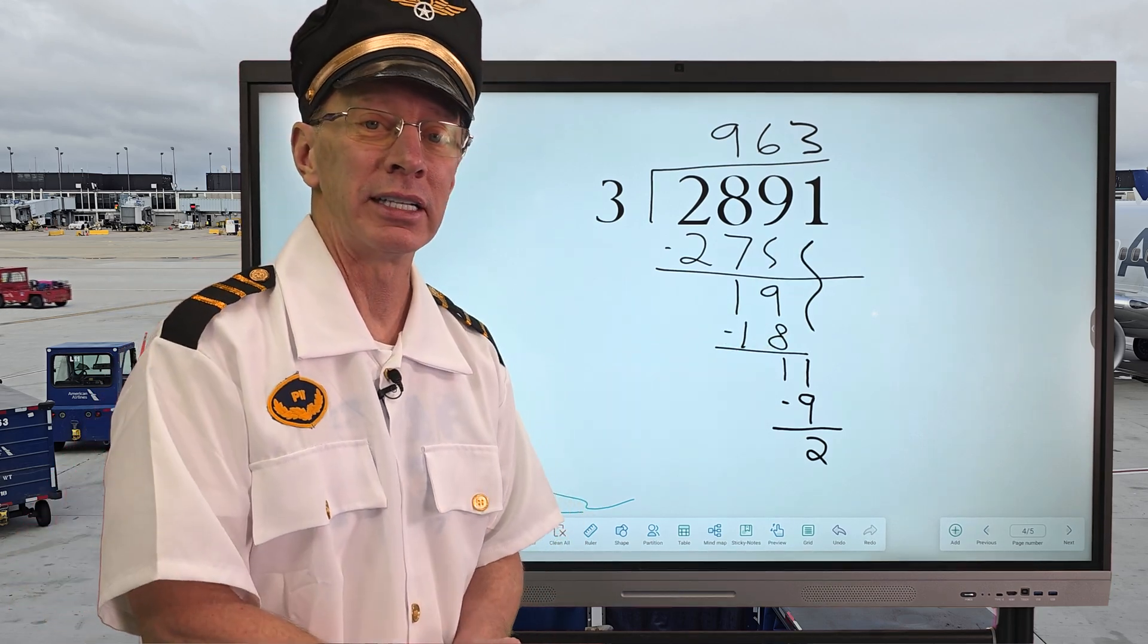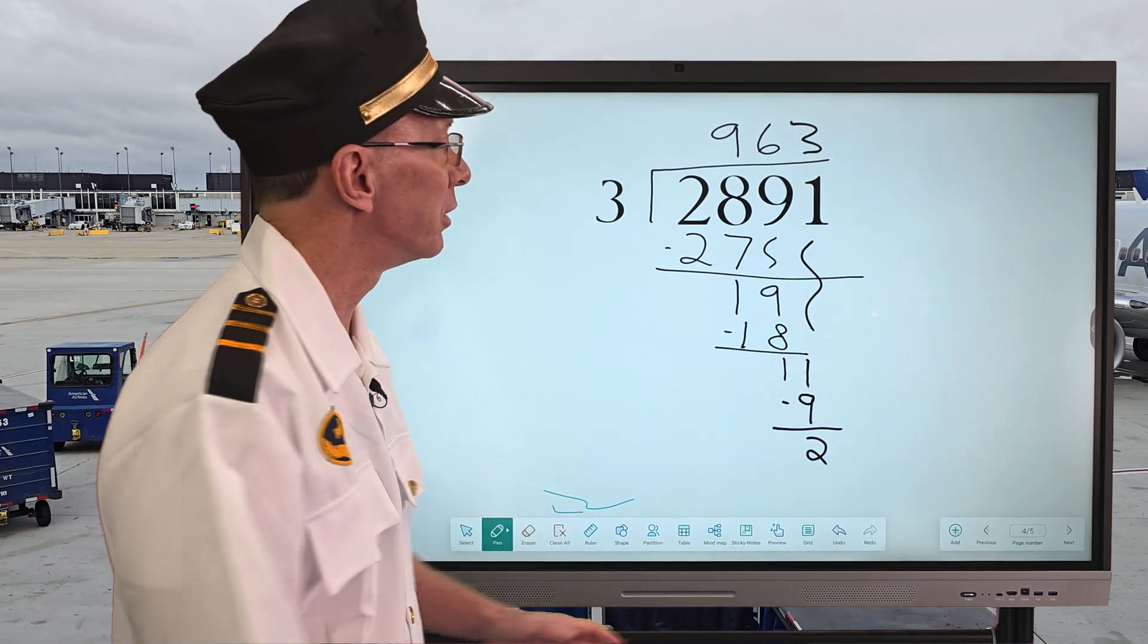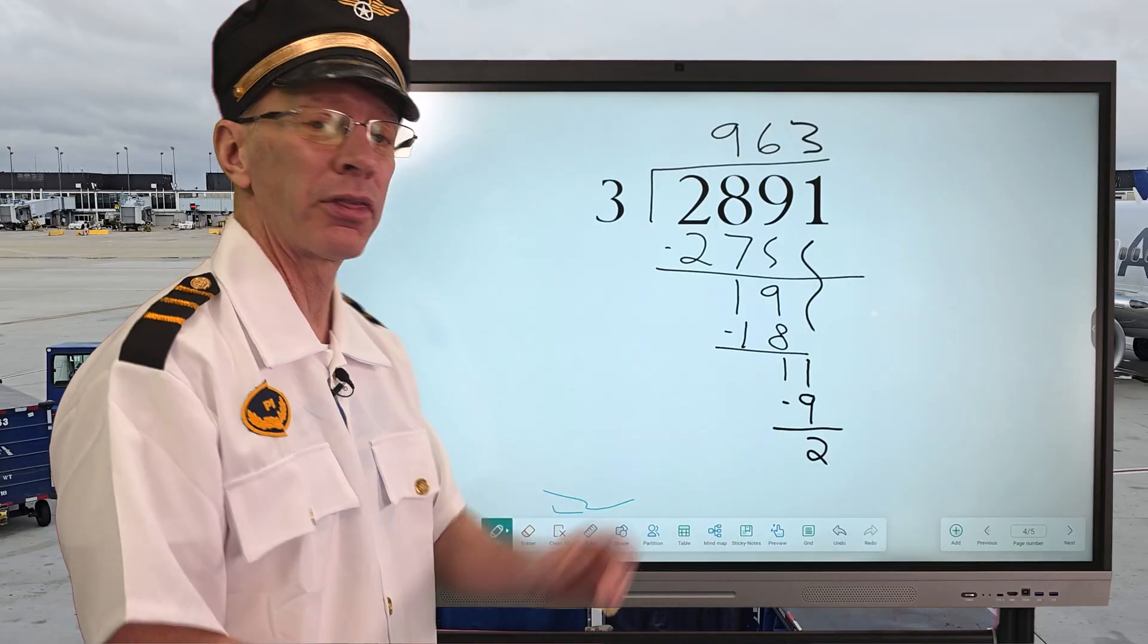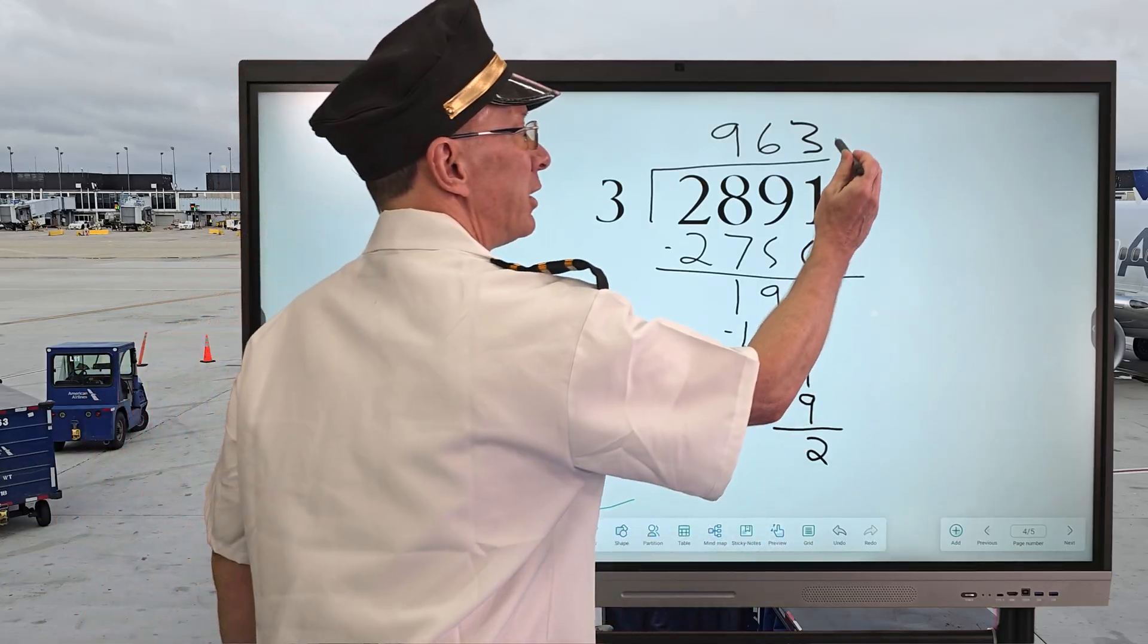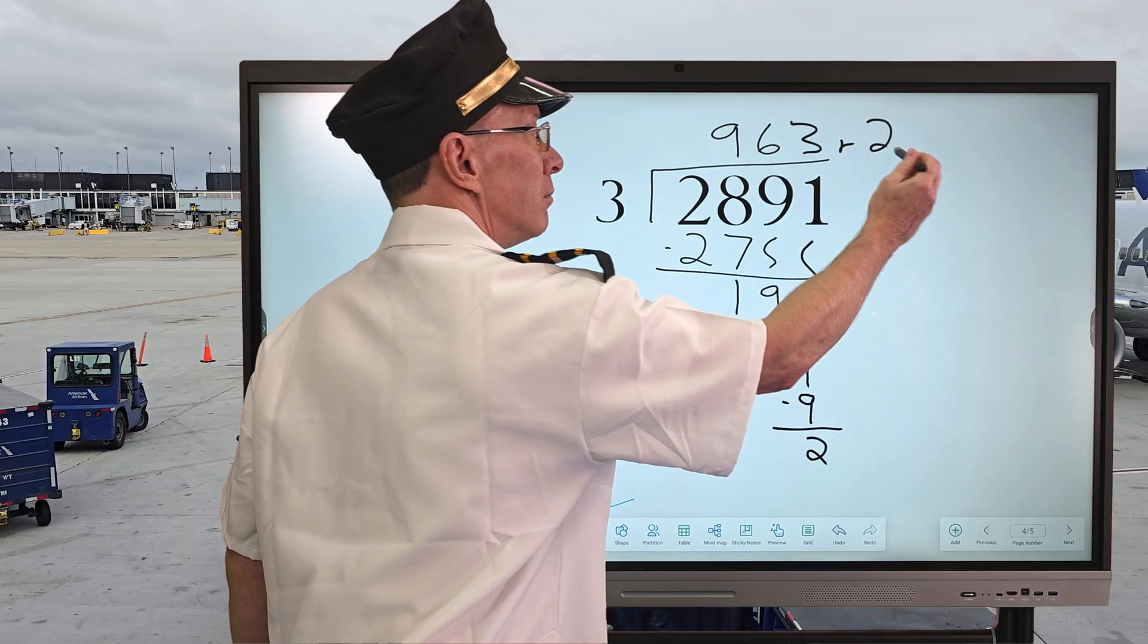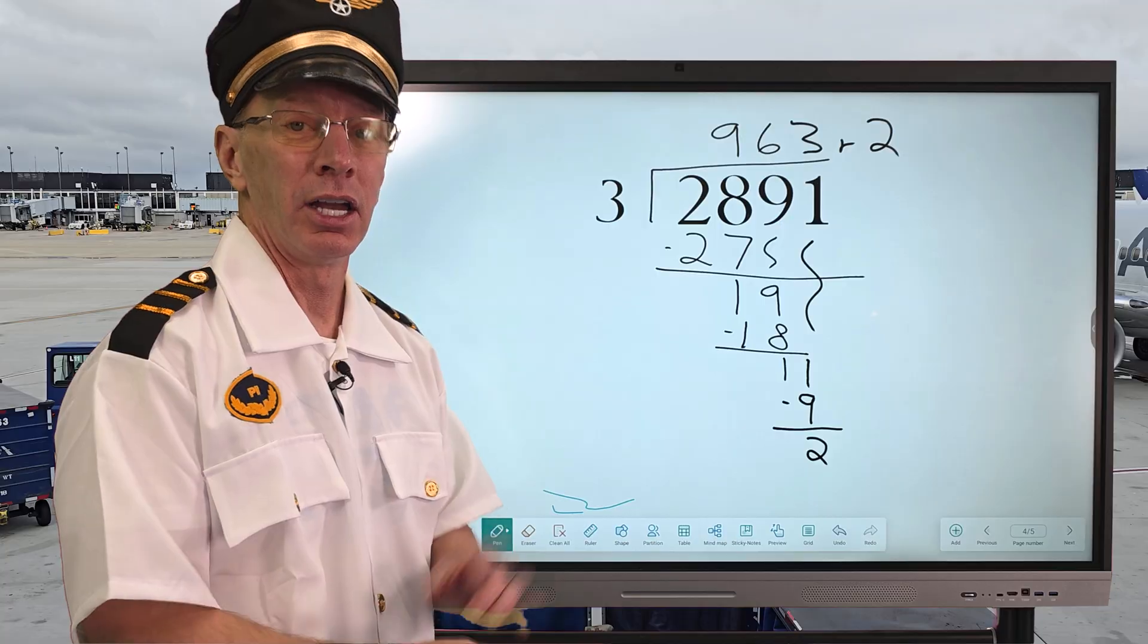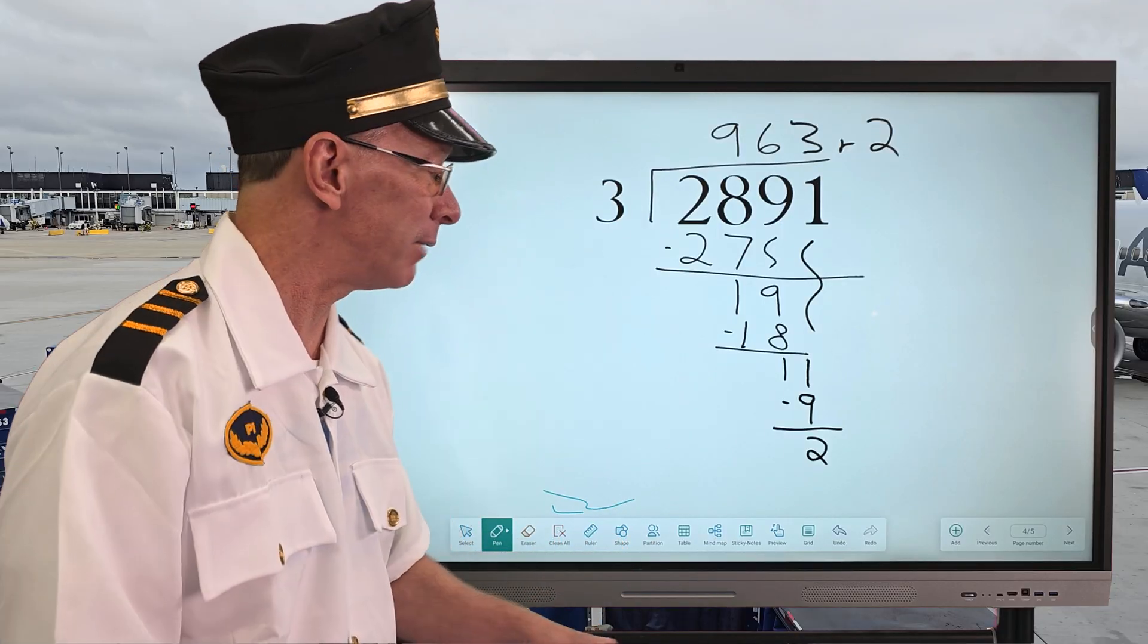Is there any other number to bring down? No, no other number to bring down. That's going to be our remainder because we can't put 3 into 2. So we have a remainder of 2. So our answer is 963 with a remainder of 2. You want to do one more? I think we got time for one more.